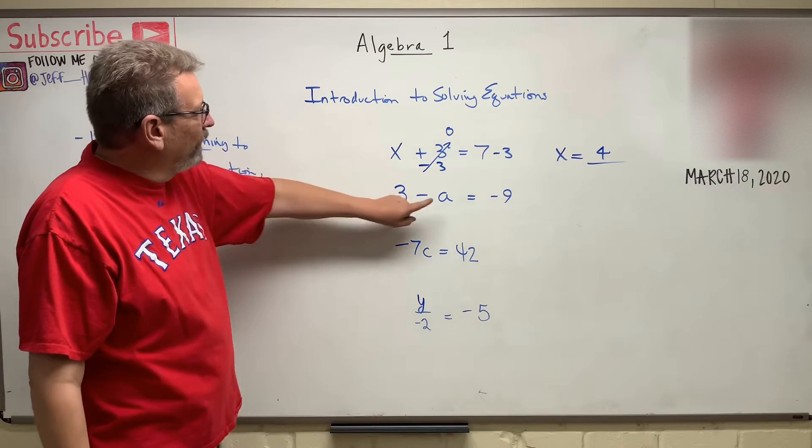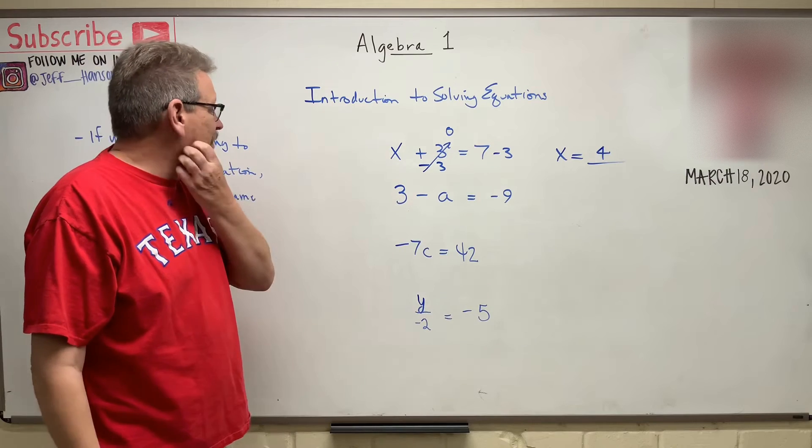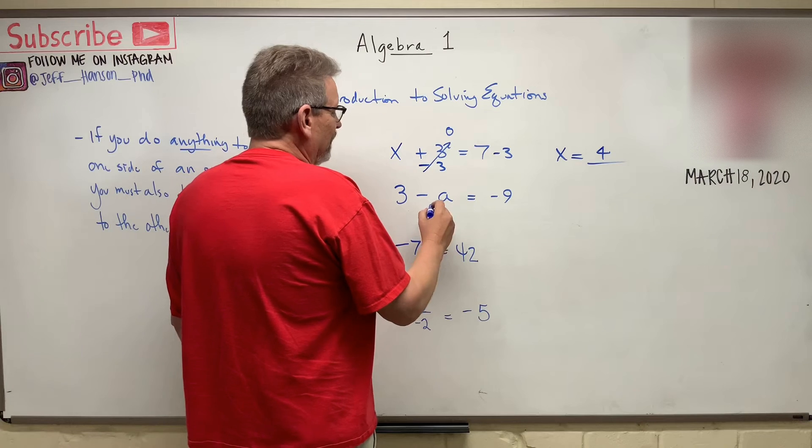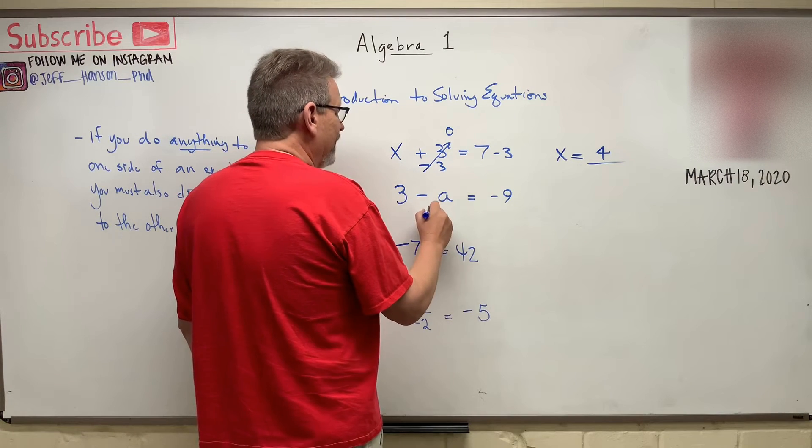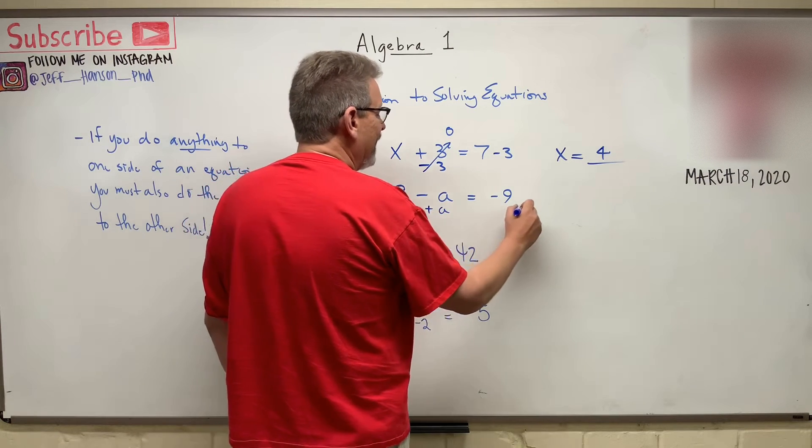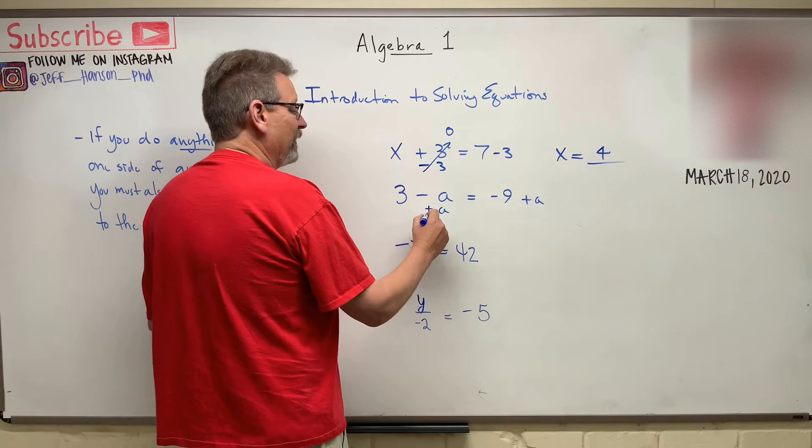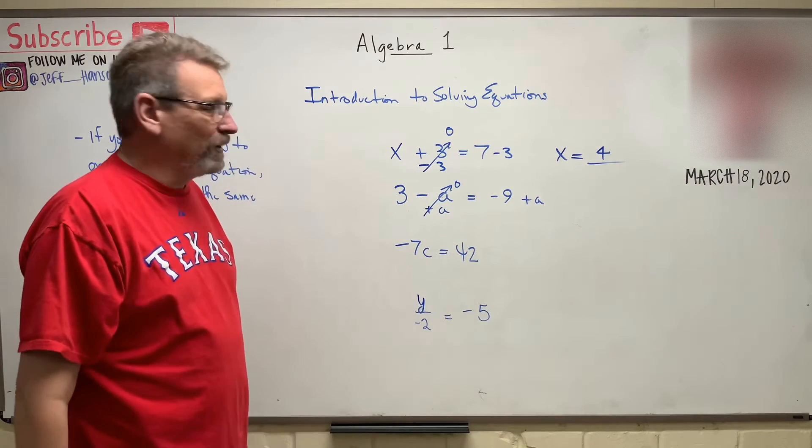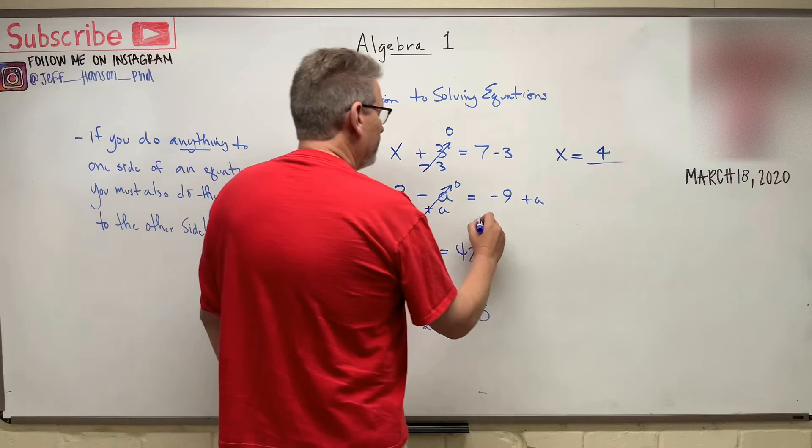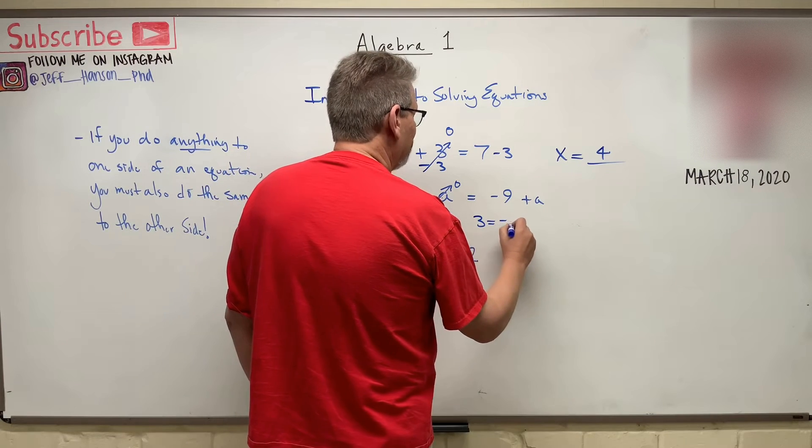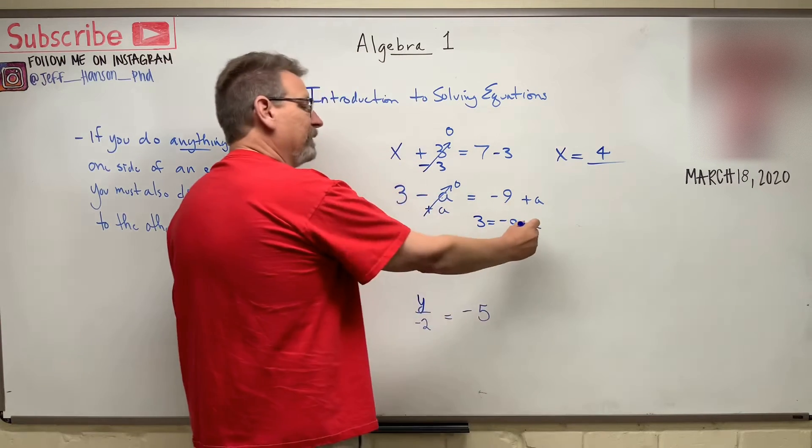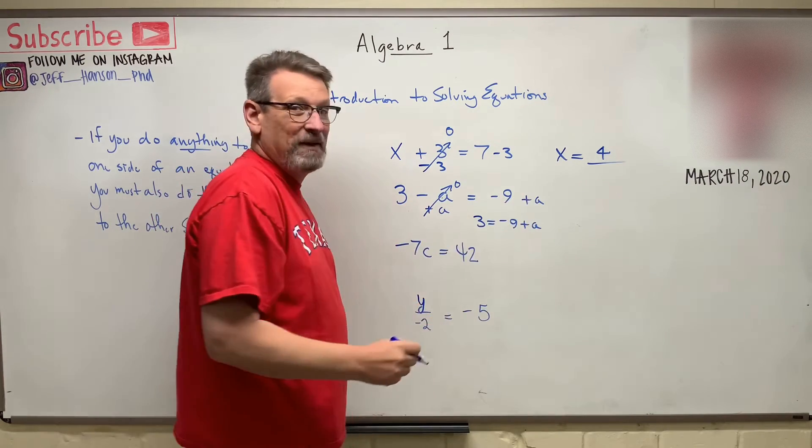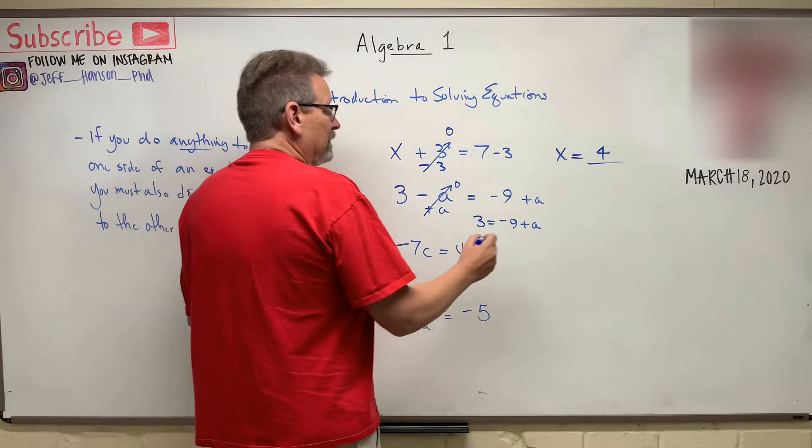We get this guy isolated. We want A all by himself. I want A all by himself. So you know what I'm going to do? I'm going to add an A to each side. So if I add an A to this side and I'll add an A to this side, what happens to the A right here? He goes away, doesn't he? Negative A plus A is zero. So I'll wind up with three is equal to minus nine plus A. And I want A all by himself, so I've got to get rid of that nine. And I'll just move the A over there because I want him to be positive. I don't want him to be negative.